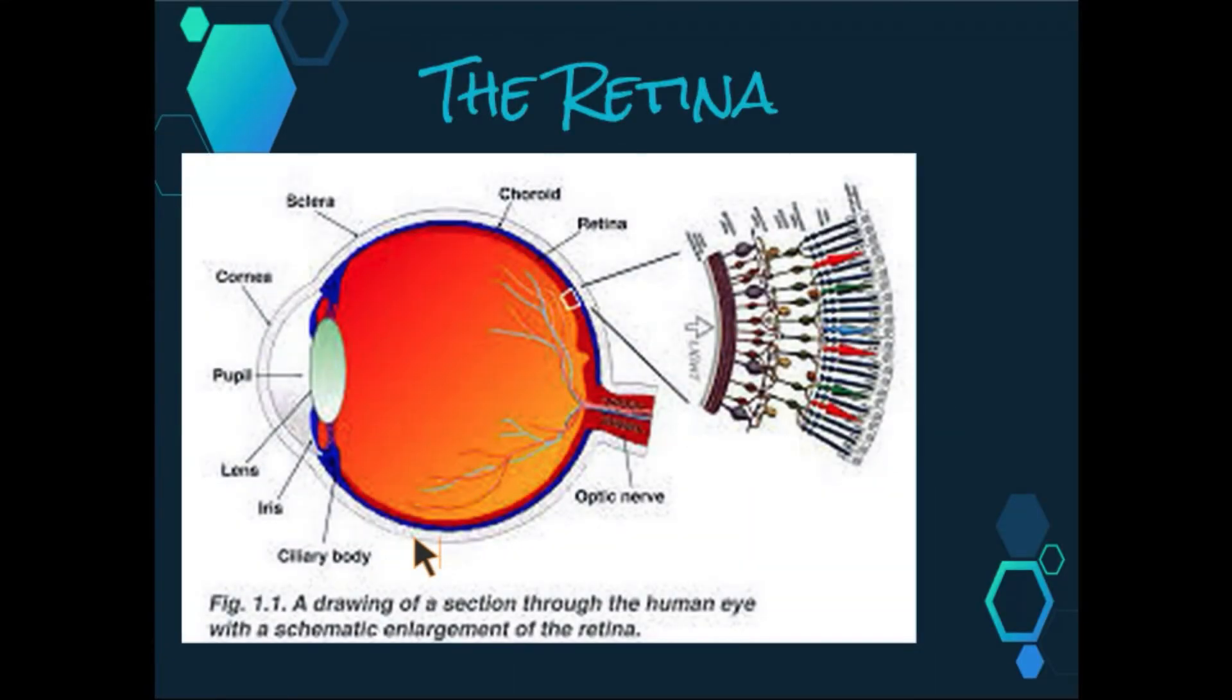So the retina is the innermost coating of the eye. It is a thin sheet about one-tenth of a millimeter thick. It consists of several layers of nerve cells, one of which is the layer of visual receptors, known as the rods and cones.